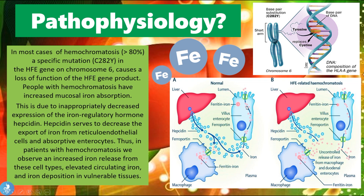In HFE-related hemochromatosis, the amount of hepcidin is decreased, so it cannot act on the ferroportin channels. These ferroportin channels are essentially gates for iron, and therefore iron keeps slipping through into the bloodstream. Eventually, there is too much iron in the blood and therefore too much iron in all the organs of the body. In summary, the HFE gene mutation causes decreased production of hepcidin and therefore increased absorption of iron from the enterocytes.